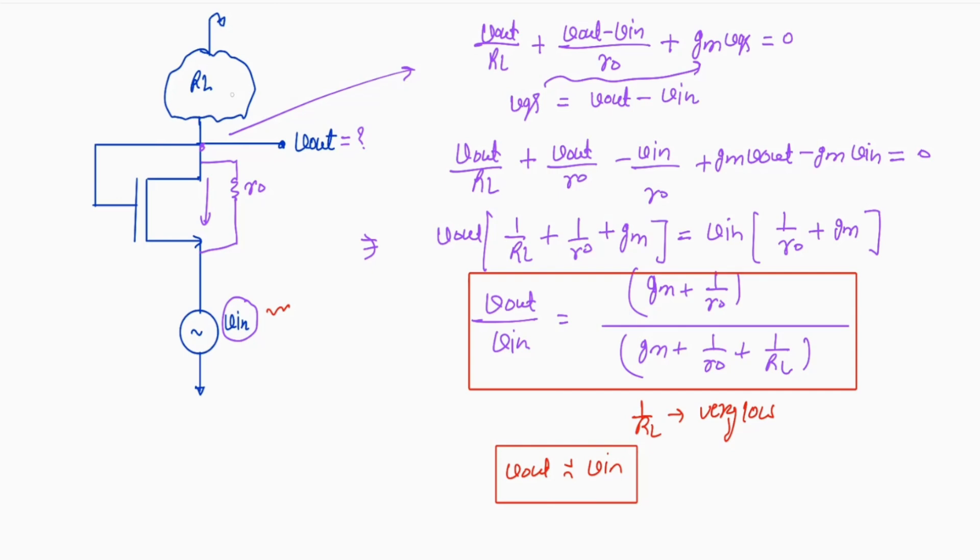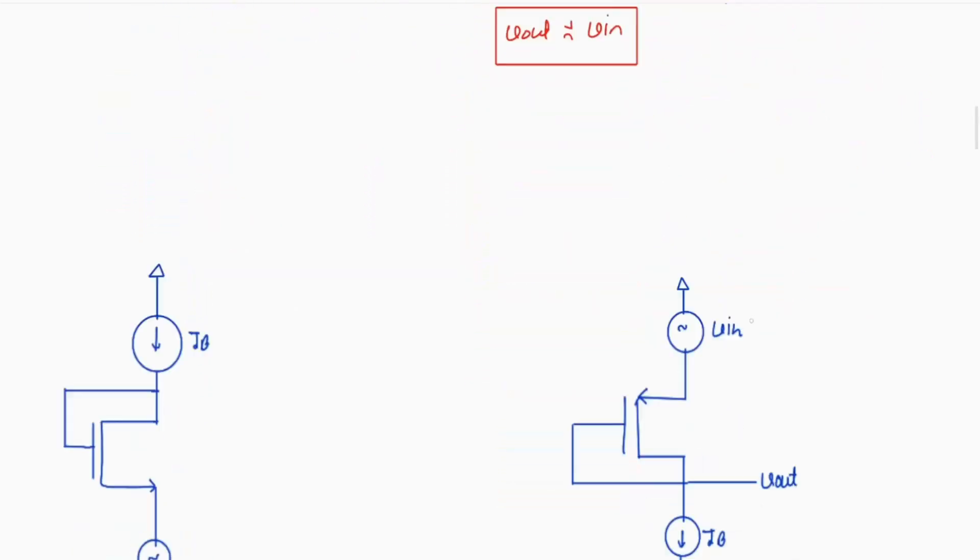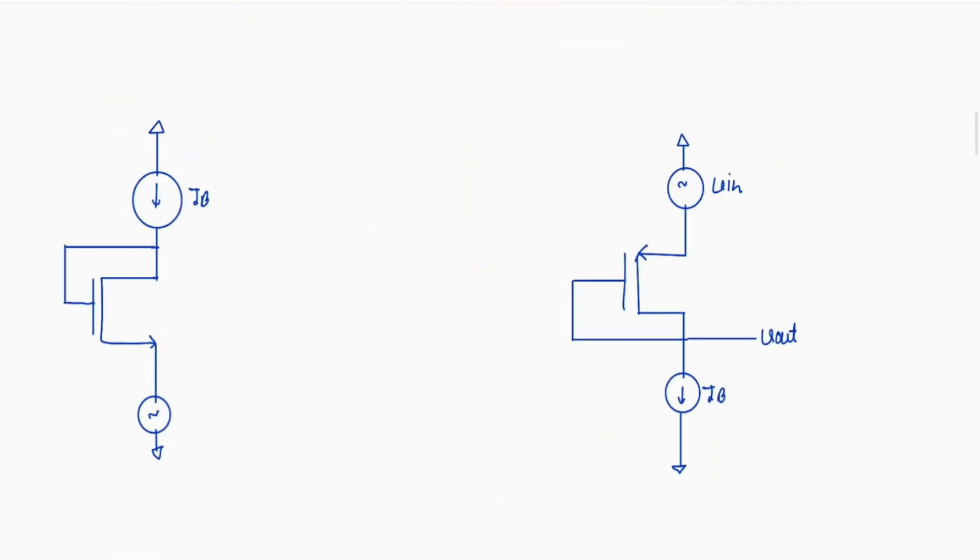And even though if it's a load or suppose you are biasing this with a constant current source, so that RL will be infinite. Suppose this case we are taking, what will be the output voltage? Here in small signal model this will be open. So RL will be infinite, so Vout by Vin equal to 1.